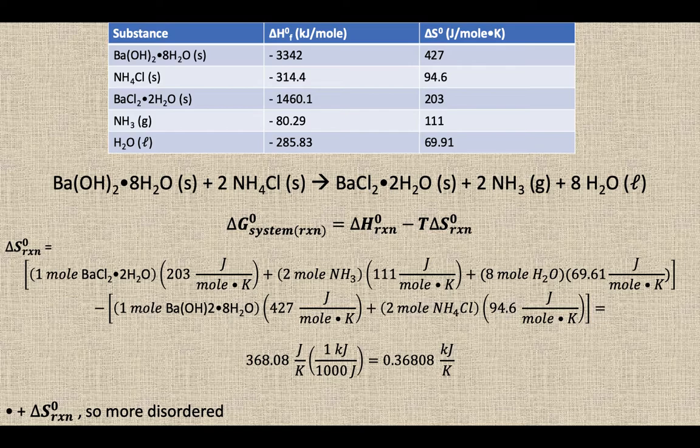If that T was a big number, then your delta H positive minus big T delta S, you're going to end up getting a negative G, spontaneous in the forward direction, thermodynamically favorable in that forward reaction. If the T is a small number, when we do positive H minus that little T delta S, we'd end up getting a positive G, thermodynamically favorable in the reverse direction. So let's find out.